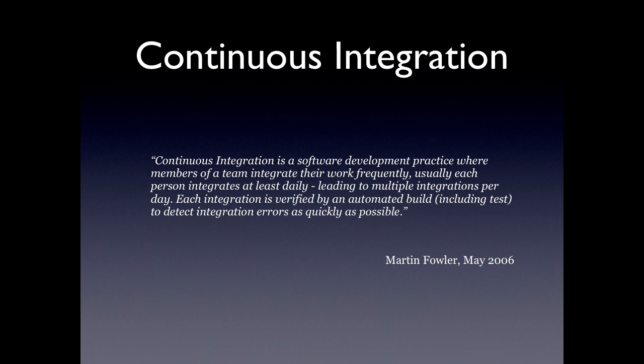Before we begin, let's define what continuous integration is. Back in May 2006, Martin Fowler defined continuous integration as a software development practice where members of a team integrate their work frequently. Usually each person integrating at least once a day, which can lead often to multiple integrations per day. Each integration is verified by an automated build process, including tests, to detect integration errors as quickly as possible.